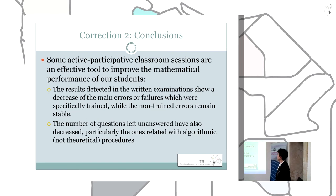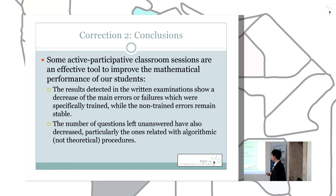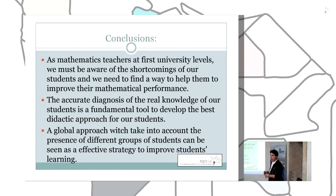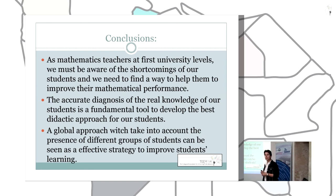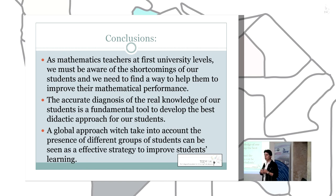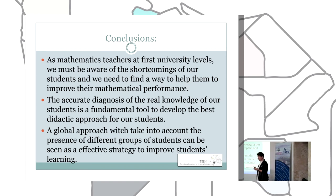In conclusion, this kind of global approach is an effective tool to improve the mathematical performance of our students, as the results show a decrease in the main errors and a reduction in the number of unanswered questions. The first step should always be to accurately diagnose the situation and then design different tools for different problems. An online tool is useful for some problems, but other kinds of errors should be trained differently — for example, using a participatory classroom session. Thank you very much.